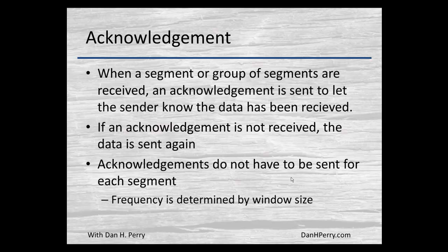The acknowledgement is used to confirm that you've received the data. A segment or group of segments are received — you don't have to acknowledge every single segment. When we talk about the window size, that's how we determine how much you can send prior to an acknowledgement. If an acknowledgement is not received, the sender will retransmit the data. They won't keep trying to retransmit forever — after a few tries, they will assume the destination system is no longer available and error out. Acknowledgements do not have to be sent for every segment, and we use the window size to determine how frequently those acknowledgements are sent.